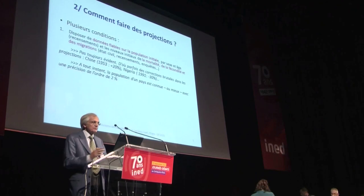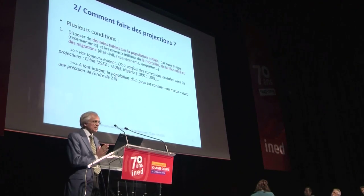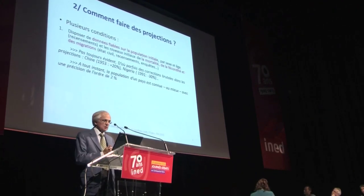So, how do we make projections? There are several requirements. First, we need reliable data — data on the initial population broken down by sex and age, which we usually obtain from censuses. We also need data on the initial levels of mortality, fertility, and immigration, because that is what we project first. We obtain those data from civil records, the census, or surveys.